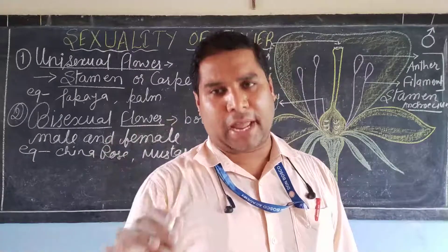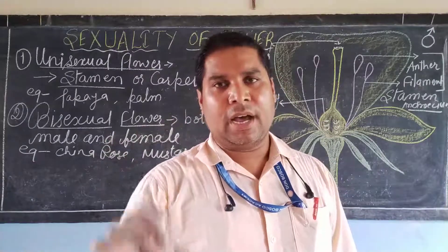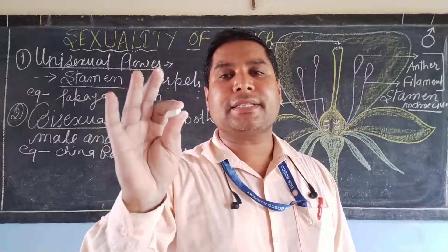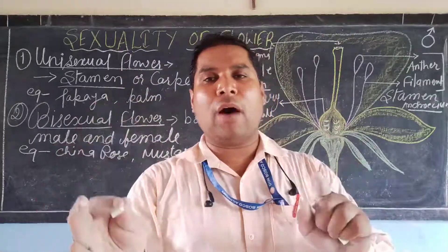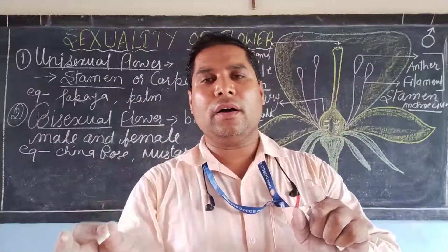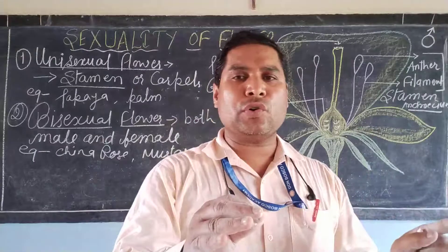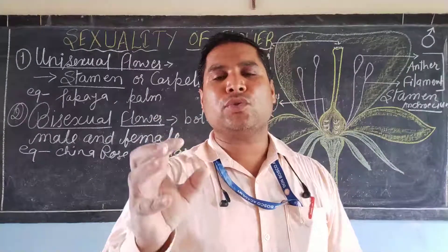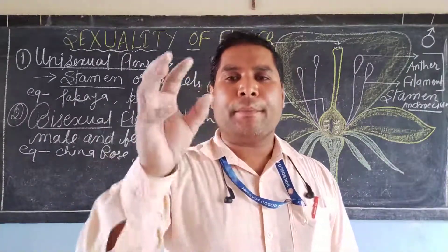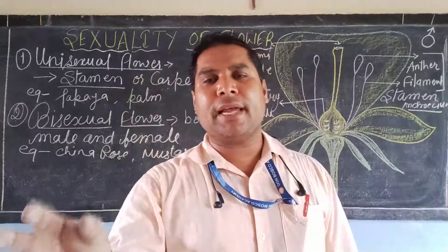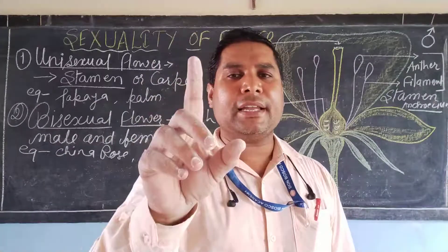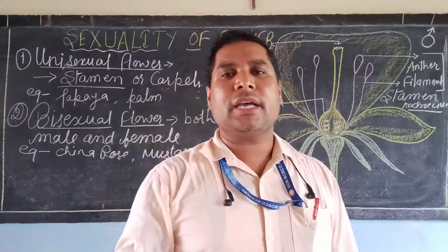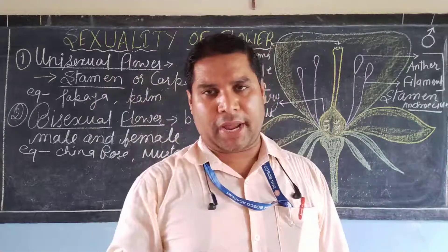A bisexual flower is also known as a Hermaphrodite. Hermaphrodite means a bisexual flower — a flower that consists of both male and female reproductive organs in one flower.